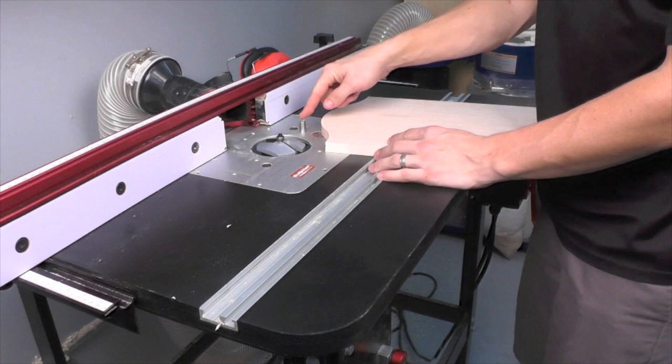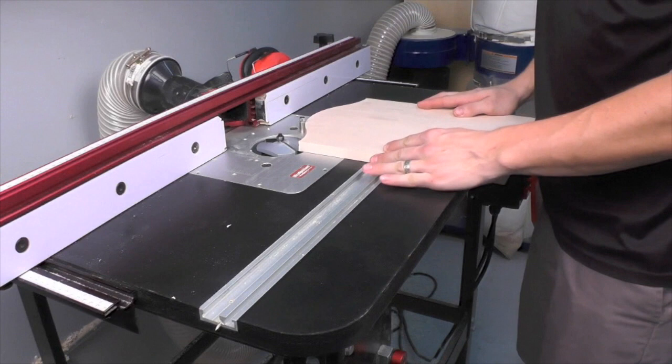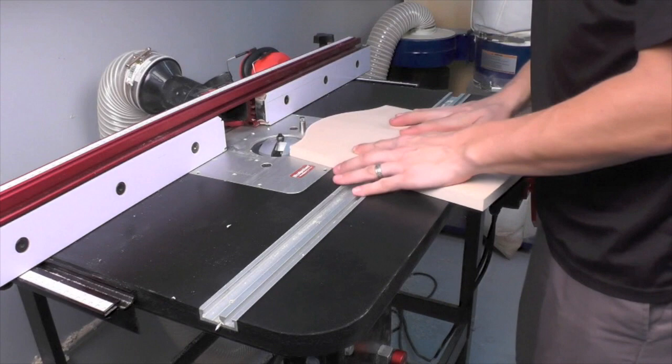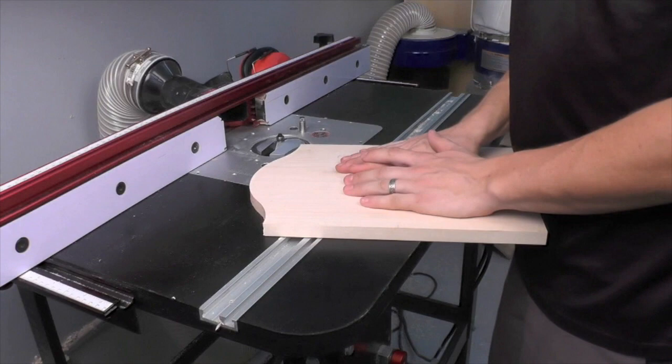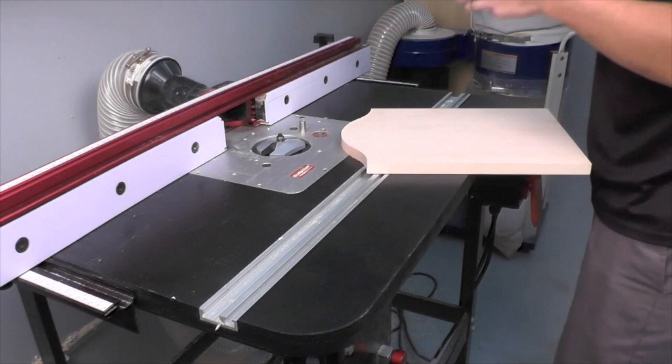The way we're going to do that is I've installed a start pin in my router table and we have a bearing on the top of our panel raising bit. We're going to use that start pin and work our panel into the bit until we make contact with the bearing, and then we're going to go ahead and route our panel. I'm going to take my time, make two or three passes with this bit. It removes a lot of material, and once I have my panel raised, we'll put the door together and see how it looks.